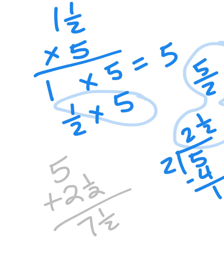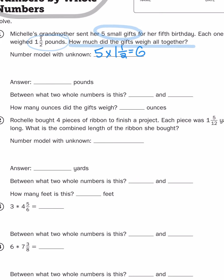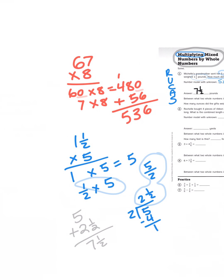And that, my friends, is it. That's how you multiply mixed numbers by whole numbers. You have to look at the mixed number as a combination or a number that has more than one place value. So Michelle's grandmother sent the equivalent of seven and a half pounds of gifts because she sent the combination of five pounds, five times one, and two and a half pounds, which is one half times five, combined together.